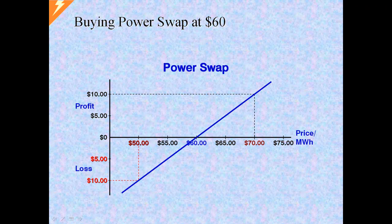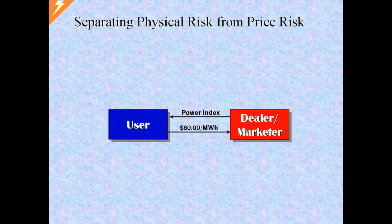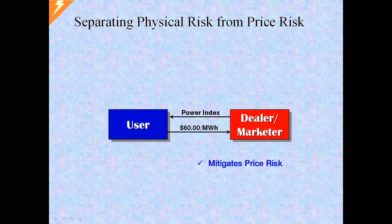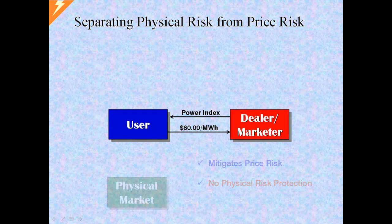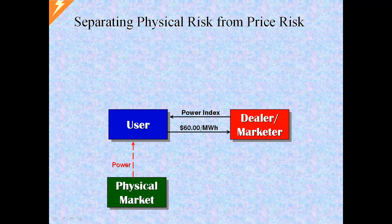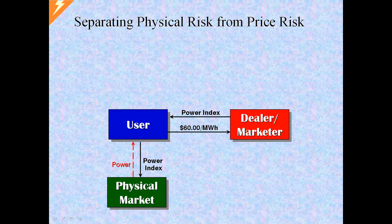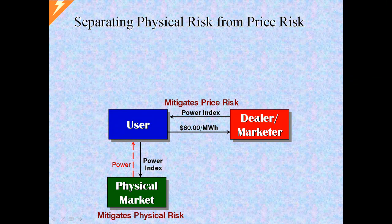This implies that from a fixed price perspective, a dealer would be indifferent between a swap and a supply contract. This means that the swap hedge provides the exact same price risk protection as a fixed price supply contract. But what it does not do is offer any support for the user's physical risk. To provide for its physical power needs, the user will enter into an index supply contract, receiving power deliveries and paying the future power index. This addresses the user's physical risk, and the swap hedges the user's price risk. The two risks have been separated into two discrete transactions.